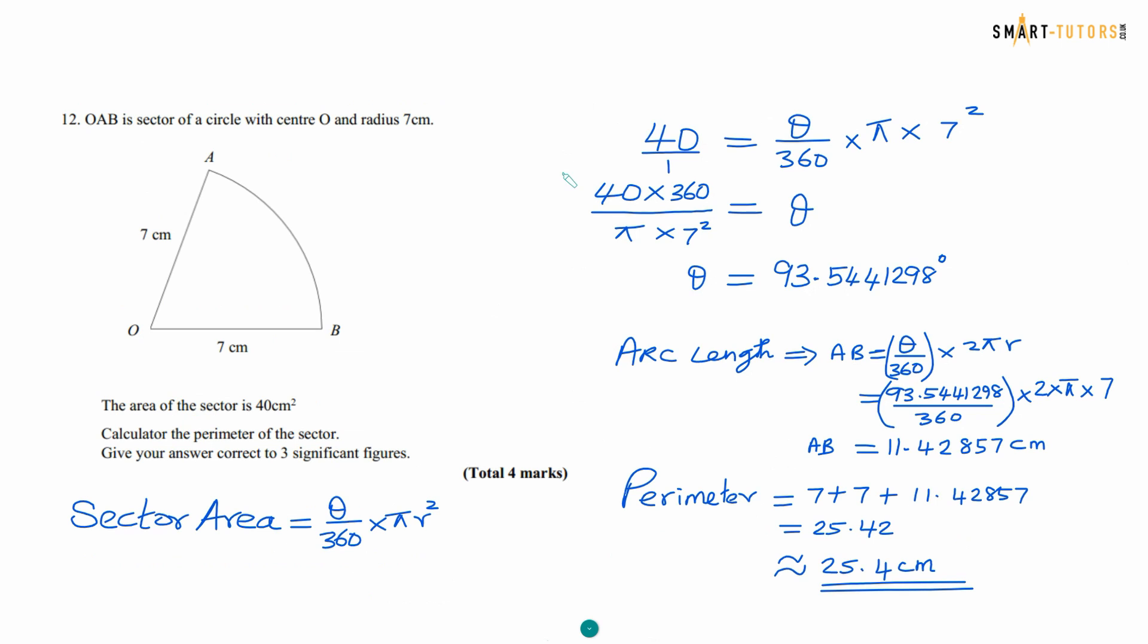Question number 12. OAB is a sector of a circle with a radius 7 cm. The area of the sector is 40 cm squared. Calculate the perimeter of the sector. Give your answer to the correct three significant figures.